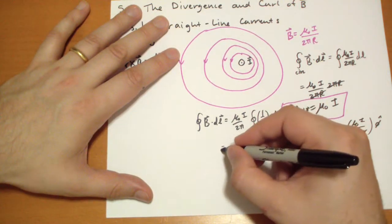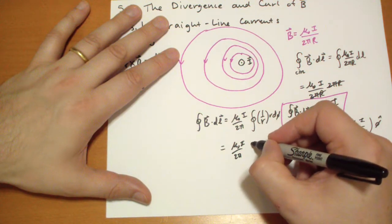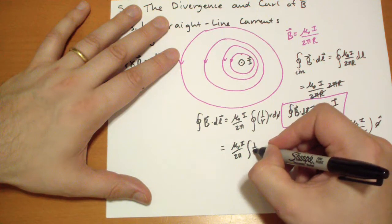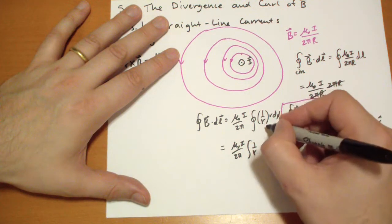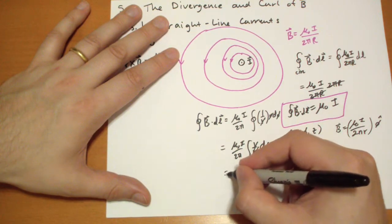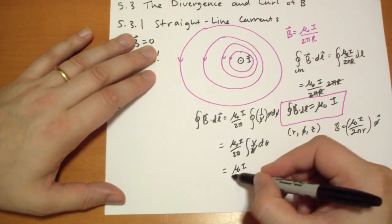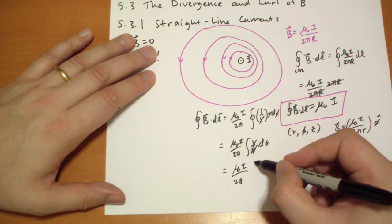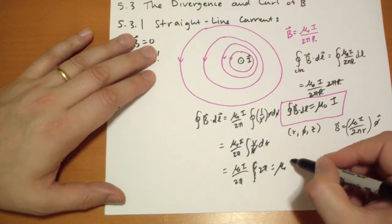And simplifying that, we get μ₀I over 2π. It's one integral. The R's cancel. So you get dφ, and what is the integral dφ? That's just 2π. The integral dφ is just 2π, so the answer is μ₀I.